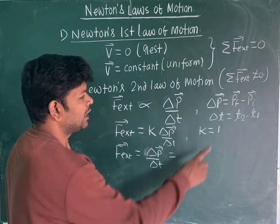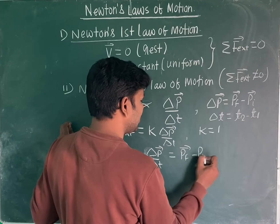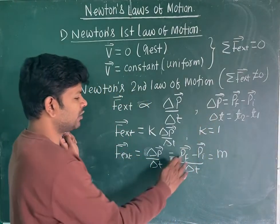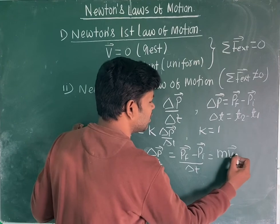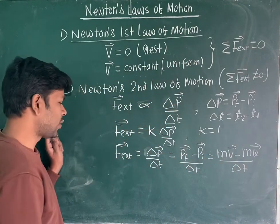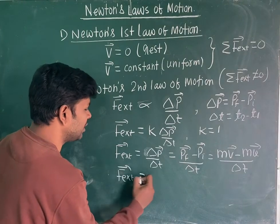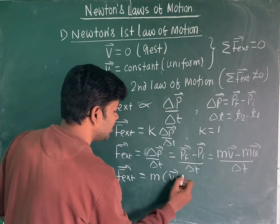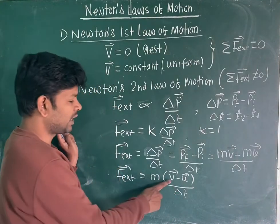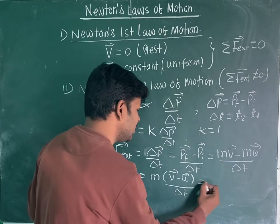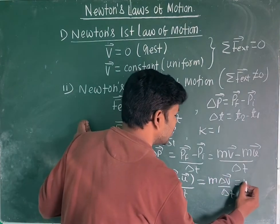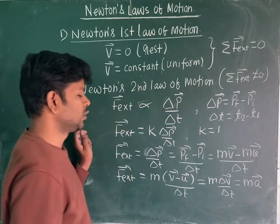If we replace the value of ΔP — which means P final minus P initial — and ΔT is the time, then since linear momentum is the product of mass and velocity, we get M times final velocity V minus M times initial velocity U, divided by ΔT. If mass is constant, we can take M common, so it becomes M times (V final minus V initial) divided by ΔT. V final minus V initial divided by ΔT gives you acceleration, so it becomes M times A. Therefore F equals MA.